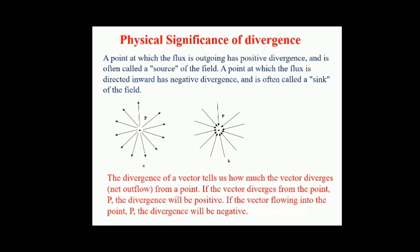A point at which the flux is outgoing is often called a source of the field. A point at which the flux is directed inward has negative divergence and is often called a sink of the field. The greater the flux of the field through a small surface enclosing a given point, the greater the value of divergence at that point. A point at which there is zero flux through an enclosing surface has zero divergence.